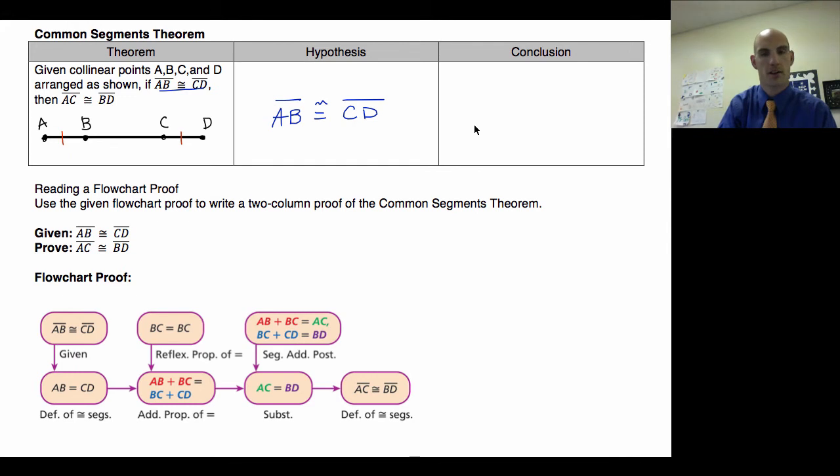Well, then our conclusion is AC is congruent to BD. Let's think about this for a second. AB congruent to CD, so these little pieces. Well, then I'm going to say that this part is congruent to this part. Well, the common segment is BC. So if I just slap a little number on this and I said this is 2, 4, 2, does it make sense to say that if 2 and 2 are congruent, then 4 plus 2 is equal to 4 plus 2? Yes, it does. So that kind of thought process is what we're working with when we're talking about flowchart proofs.